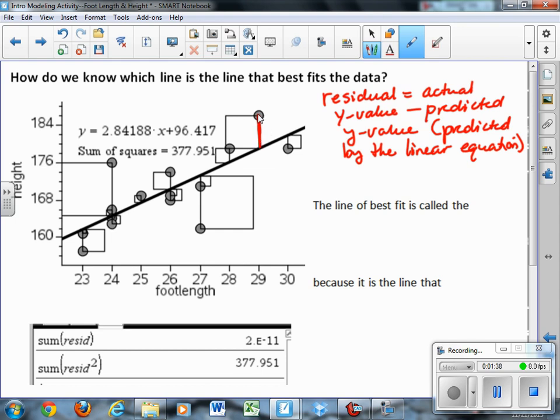But their actual height was about 185 centimeters. So the difference between the actual and the predicted is called the residual, or the leftover, or the error in the prediction. Now notice we have all different residuals here from the different size residuals for the various points, some large, some small.